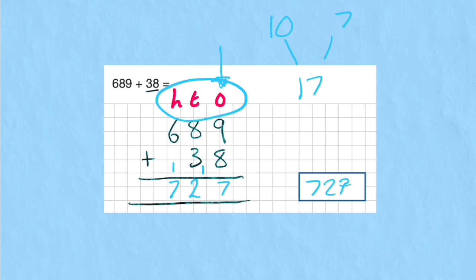A couple of tips. Always put your column titles and make sure you leave room for these extra numbers that you're going to roll over.